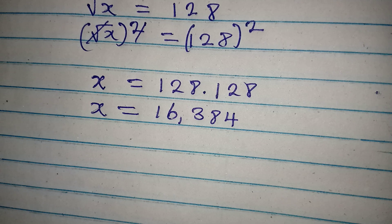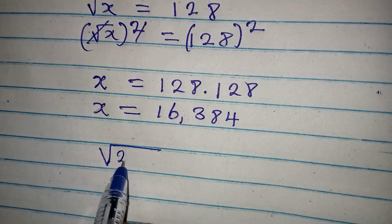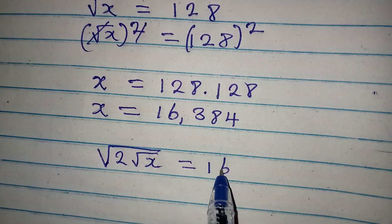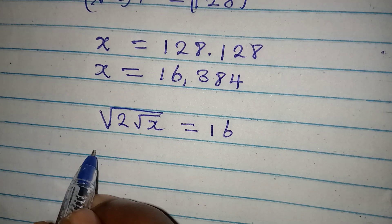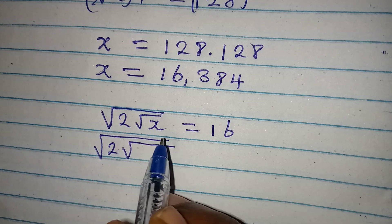Now let's put it back into the equation, which is square root of 2 square root of X equal to 16. So this means that we are having square root of 2 square root of X, where X is now 16,384.